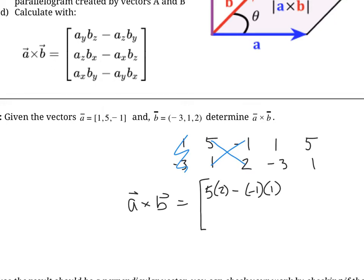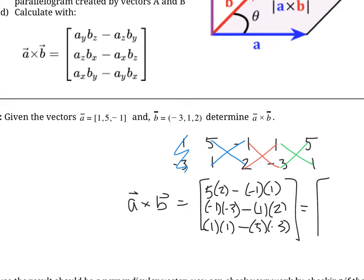It's a little complicated, but let's keep going and maybe it'll click. We do the same thing with the second pair: negative one times negative three minus one times two — that's the y component. And for the z component: one times one minus five times negative three. Simplifying: five times two is ten plus one is eleven; the second gives three minus two which is one; and the last comes out to sixteen.